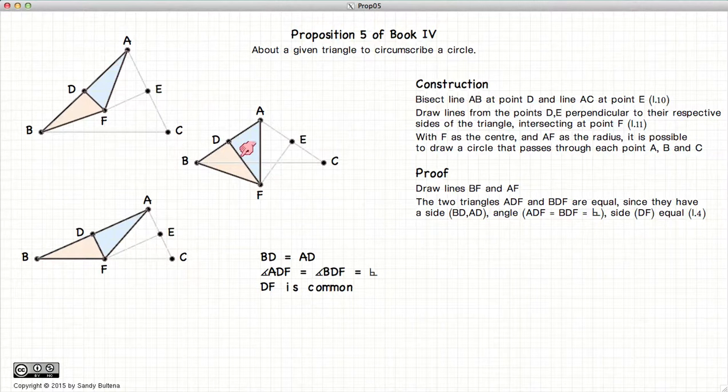Alright, again looking at our three separate triangles, we look at the triangles AFD and BFD. DF is common, so it is the same length in both triangles. DA is equal to DB because we bisected the line. So these two sides are equal.